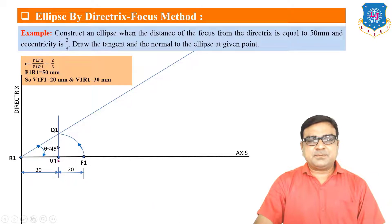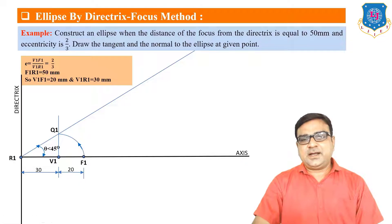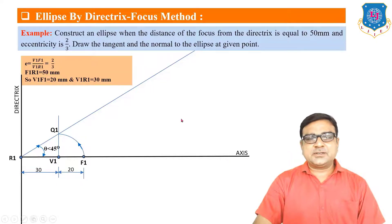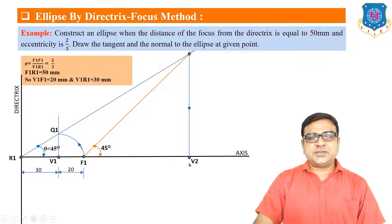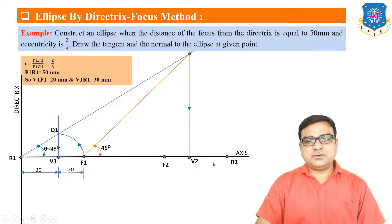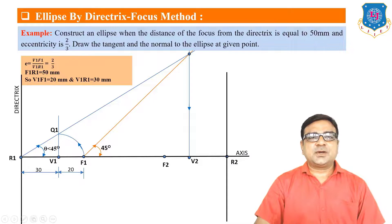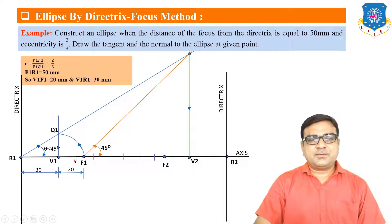V1 is one end of the major axis, and the other end V2 is located on this line. To find V2, draw a line from F1 at 45°. The intersecting point gives F2. Here, V1F1 equals V2F2, and R1V1 equals R2V2. Draw the second directrix on the other side.